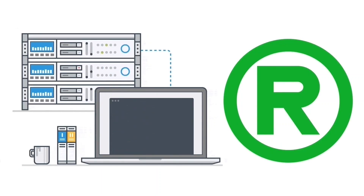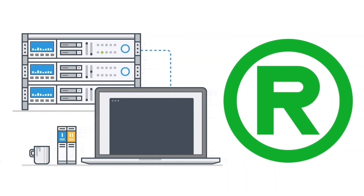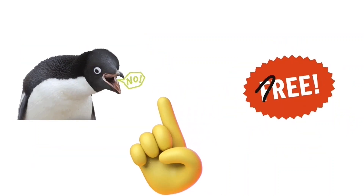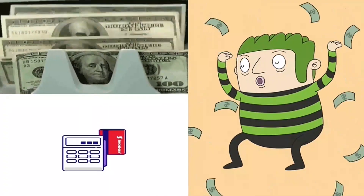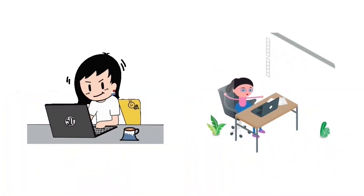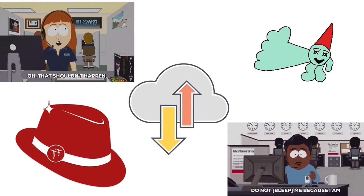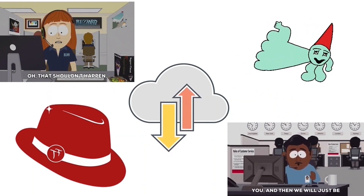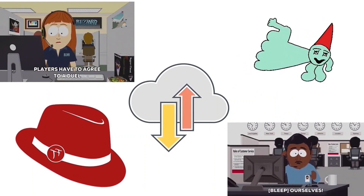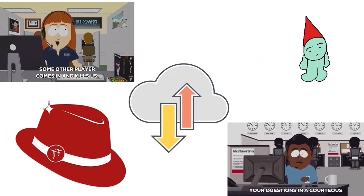If your system is registered with the Red Hat network and you have an active RHEL subscription, you do not need to do any additional configuration or setup to install RPM packages. RHEL subscription is not free — you need to pay a subscription fee. If you want to use an RHEL system in the production environment, you should purchase it. A subscription not only allows you to download the latest and updated packages but also allows you to get technical support from Red Hat.